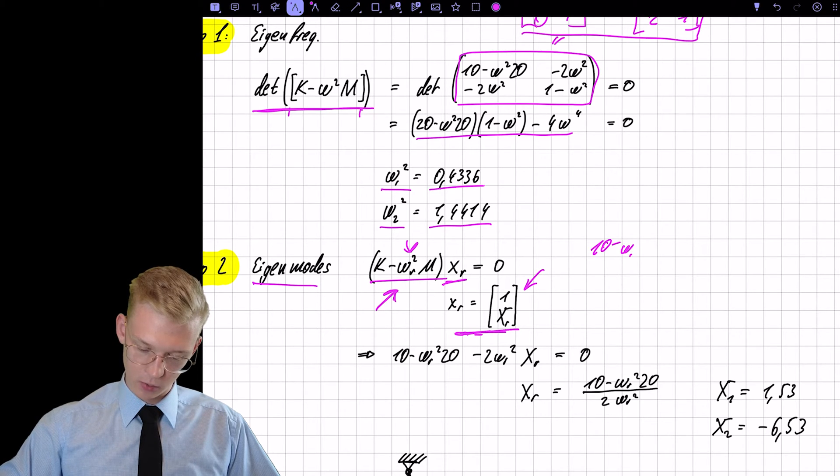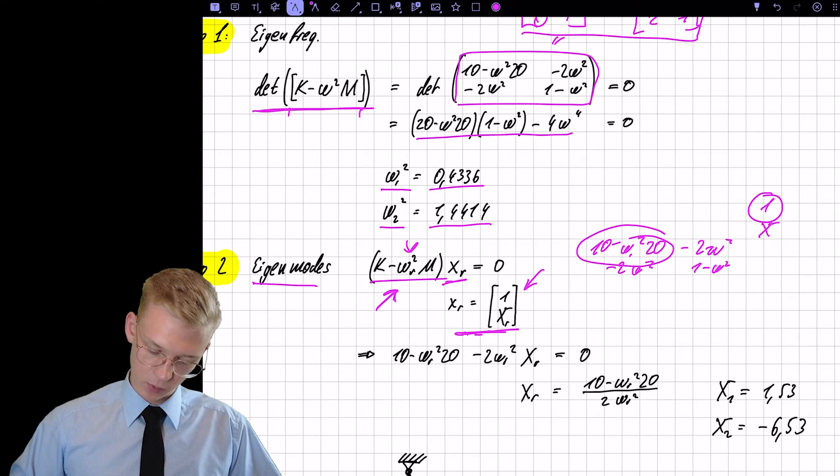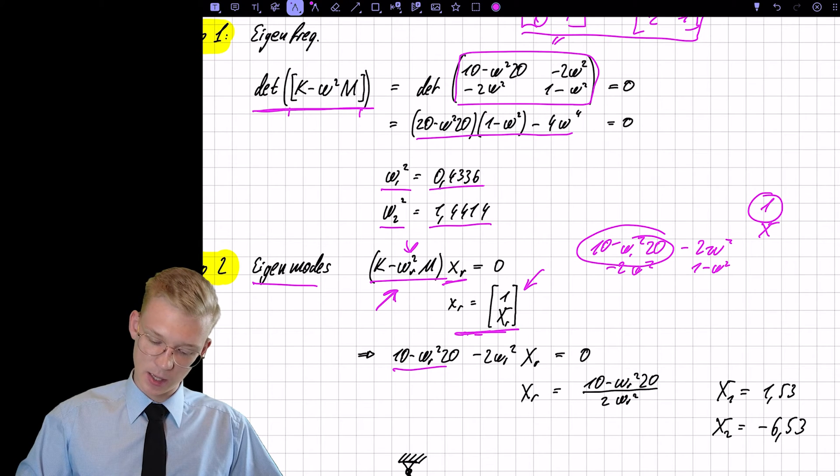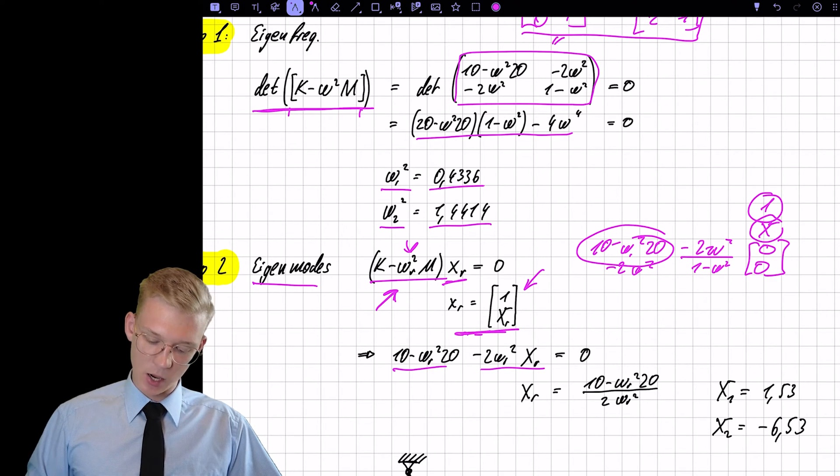We have 10 minus omega 1 squared 20 minus 2 omega squared minus 2 omega squared 1 minus omega squared like this and then we have our 1 and x. So we multiply this one with this one. We get this. Then we multiply our x with that. That is here and we're supposed to get a zero and zero. So this is how we can now determine our xr. So we just restructure these terms and we get our terms for each xr.